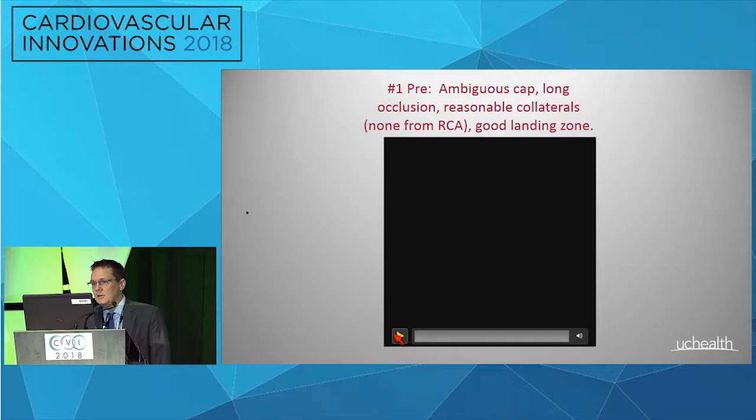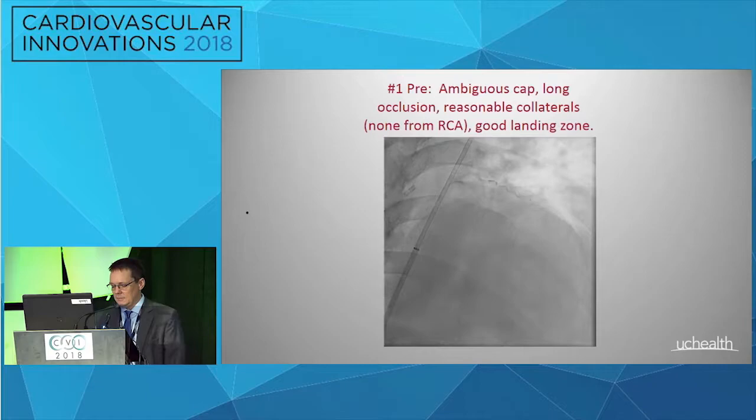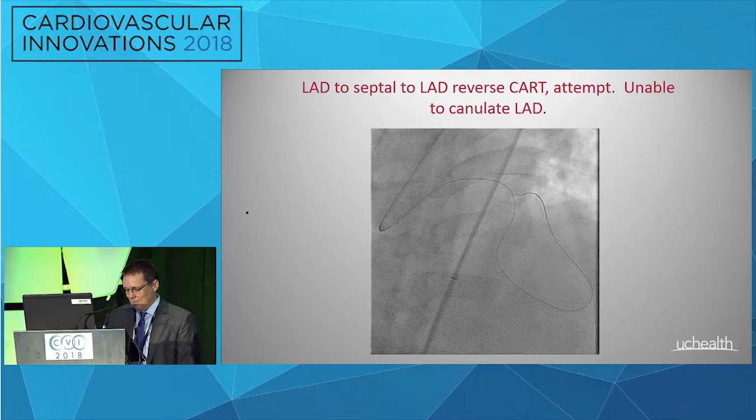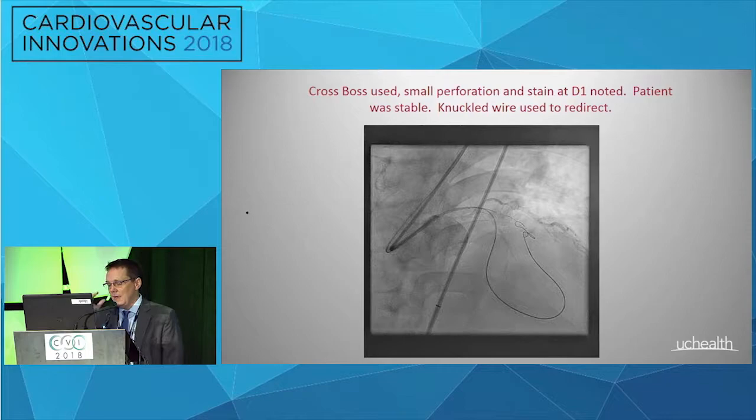An occluded LAD with an ambiguous cap, reasonable collaterals, a pretty good landing zone. We made an attempt at a reverse cart, and I was unable to get that. But I was able to start driving some equipment forward with the idea that I'm going to move the working zone just down past the site where we just beat it up, try to get a crossboss out here, and then I'll get a stingray.